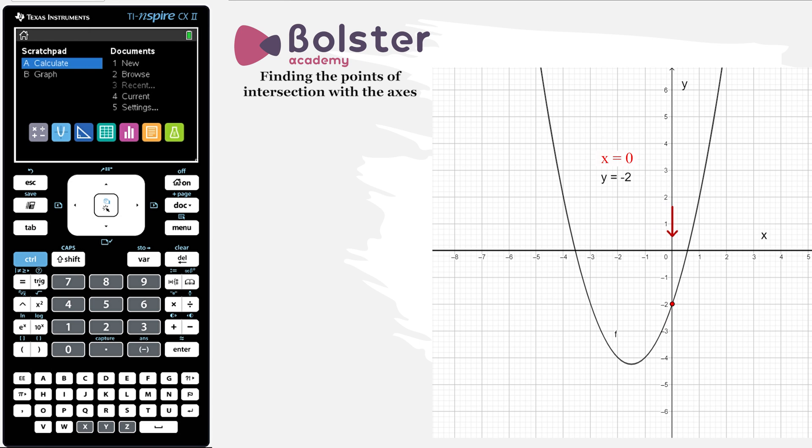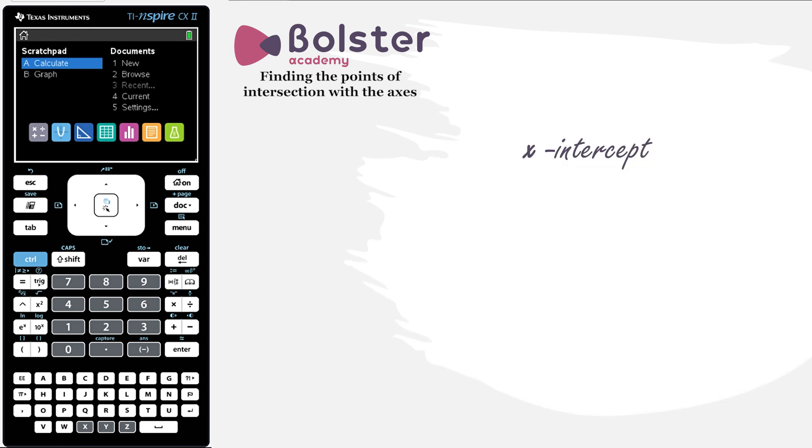This gives us a clear method for how to find the x-intercept or the y-intercept of a graph. For the x-intercept, we just let y equal zero and we solve for x. And to find the y-intercept, we let x equal zero and we solve for y.